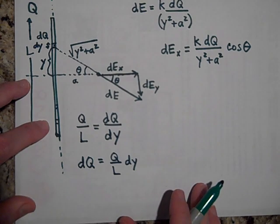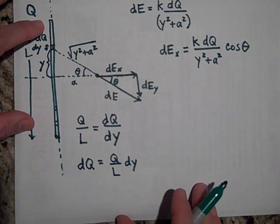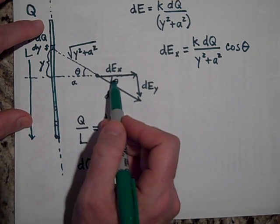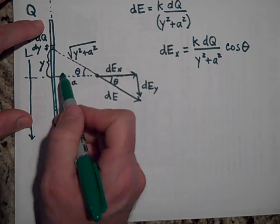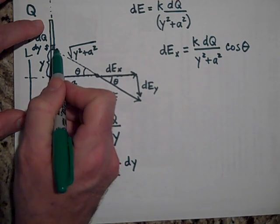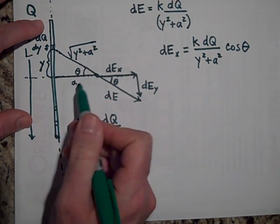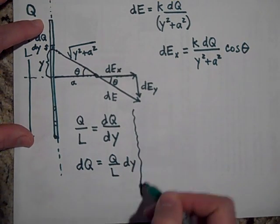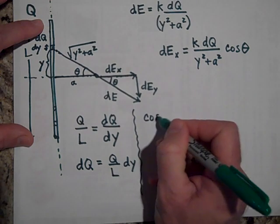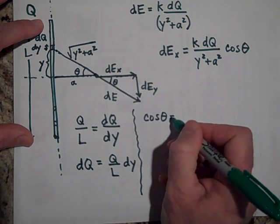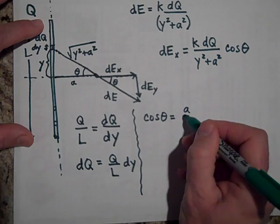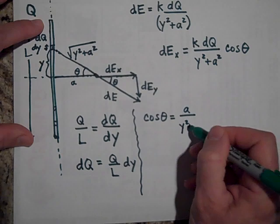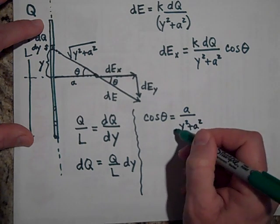I'd like you to see one other thing. The cosine of theta, if we use this triangle, is equal to the adjacent side divided by the hypotenuse. So the cosine of theta is equal to the adjacent side a over the hypotenuse which is square root of y squared plus a squared.